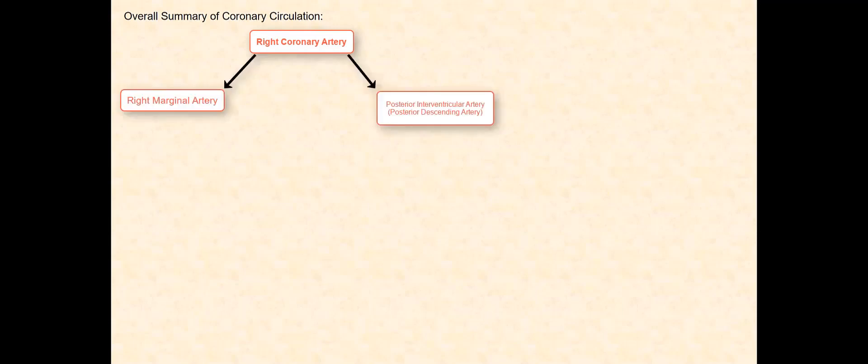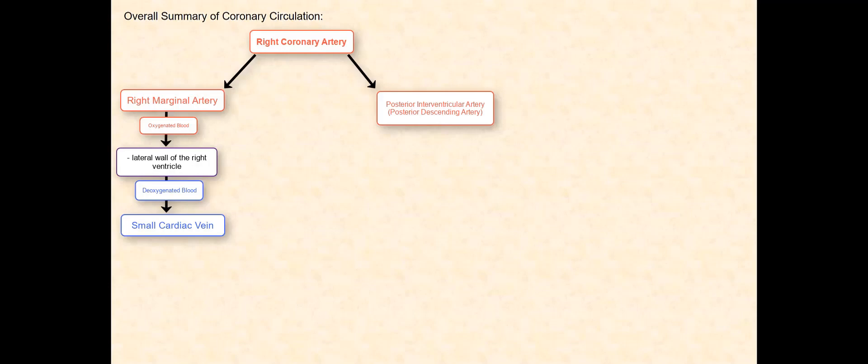Let us now summarize the overall coronary circulation. We begin with the two coronary arteries — the right and left coronary arteries — that branch off the aortic root, specifically at the aortic sinus. The right coronary artery branches into two major arteries: the right marginal artery and the posterior interventricular artery, or posterior descending artery. The right marginal artery supplies oxygenated blood to the lateral wall of the right ventricle. The deoxygenated blood is then received by the small cardiac vein, which converges with the coronary sinus.